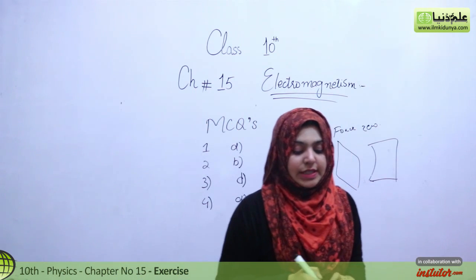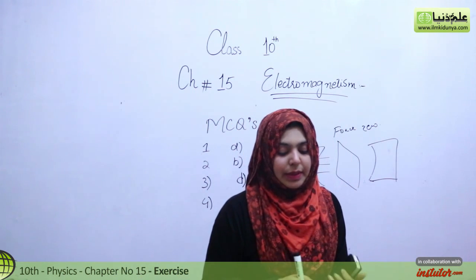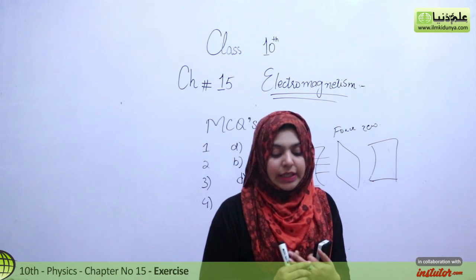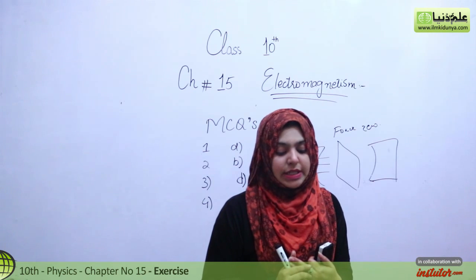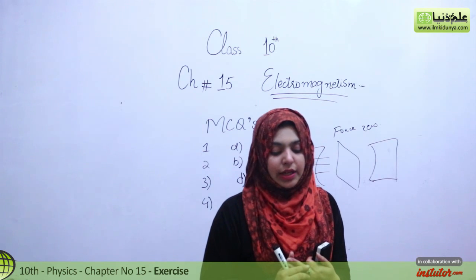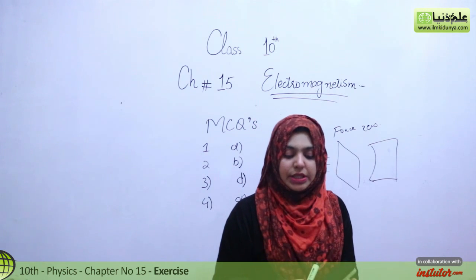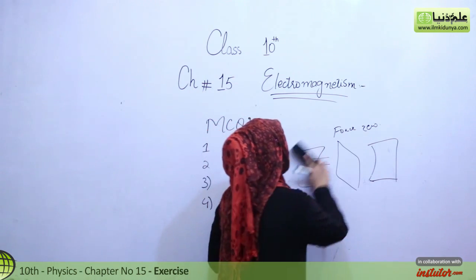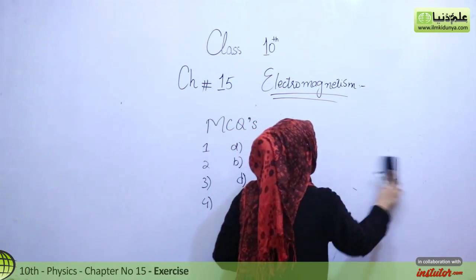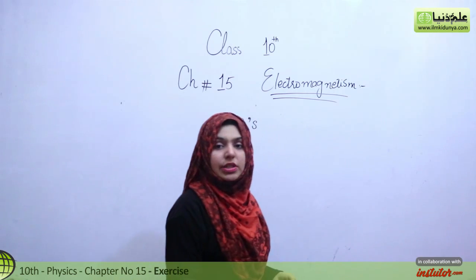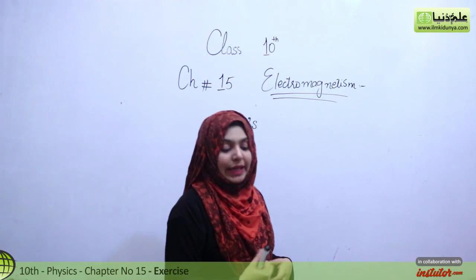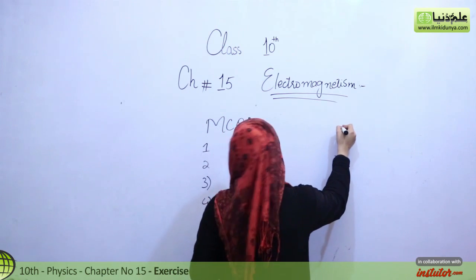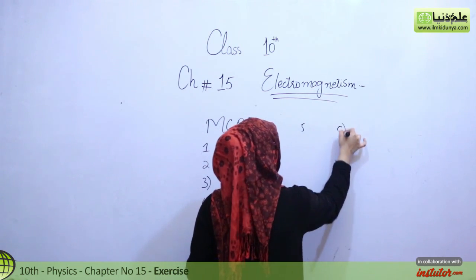Number 5 is: a DC motor converts — number A mechanical energy into electrical energy, number B mechanical energy into chemical energy, number C electrical energy into mechanical energy, and number D electrical energy into chemical energy. Our DC motor converts electrical energy into mechanical energy, so C is the right option for number 5.